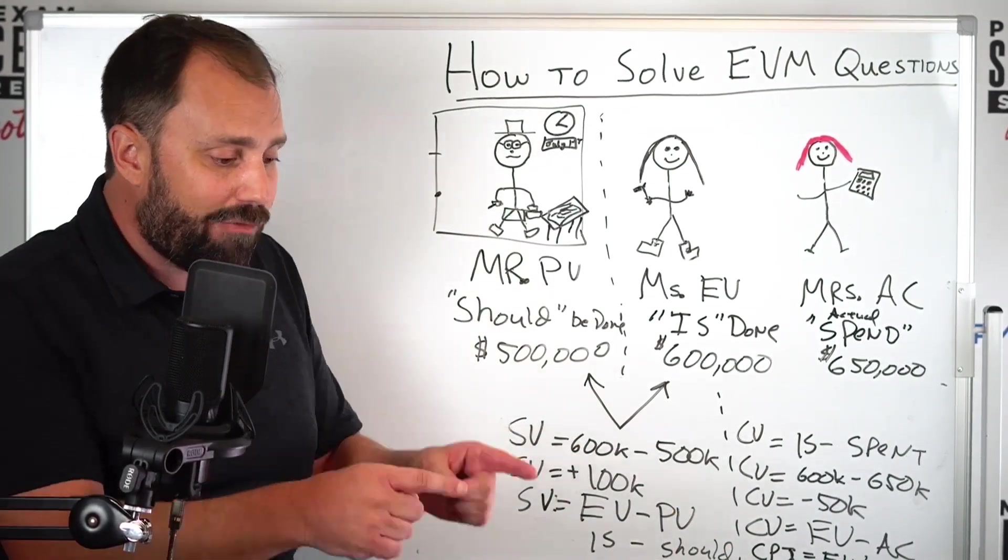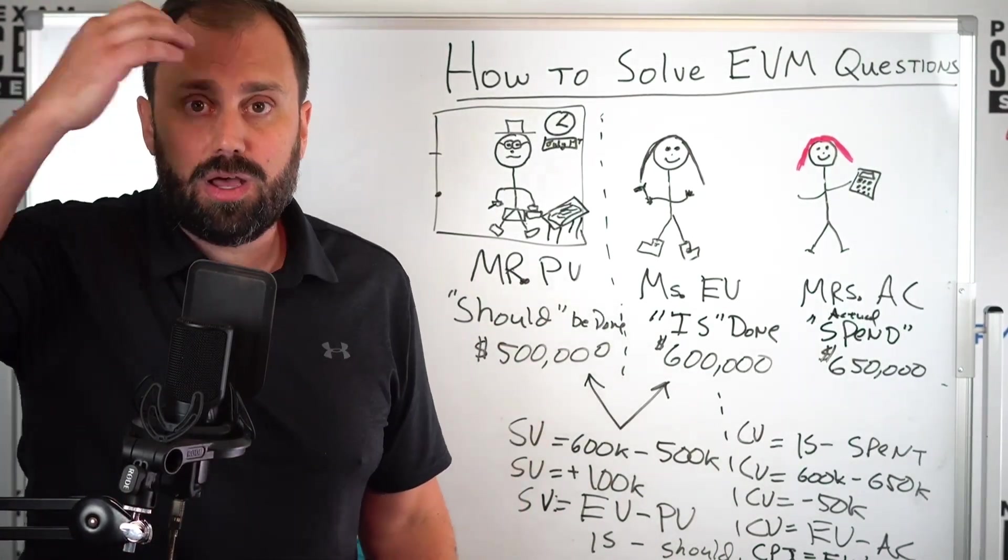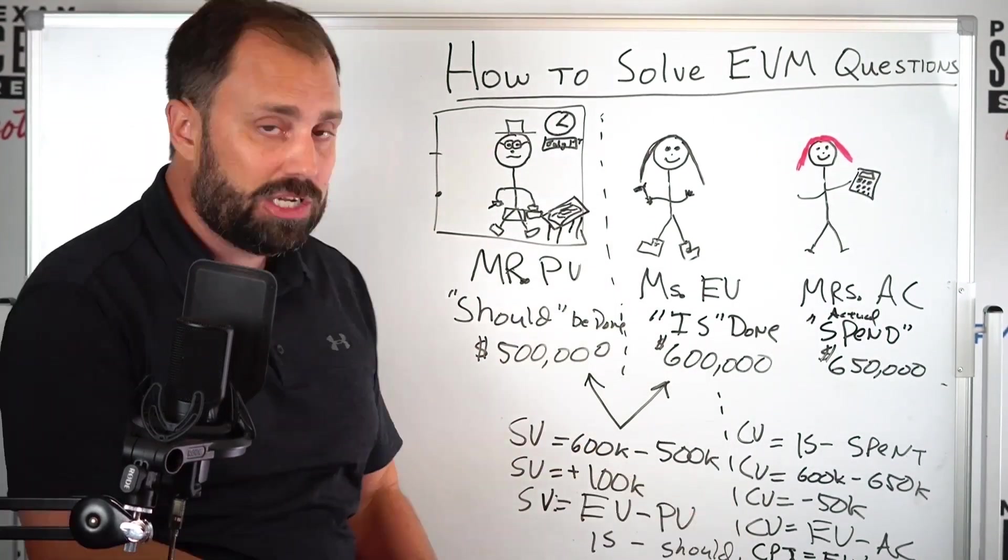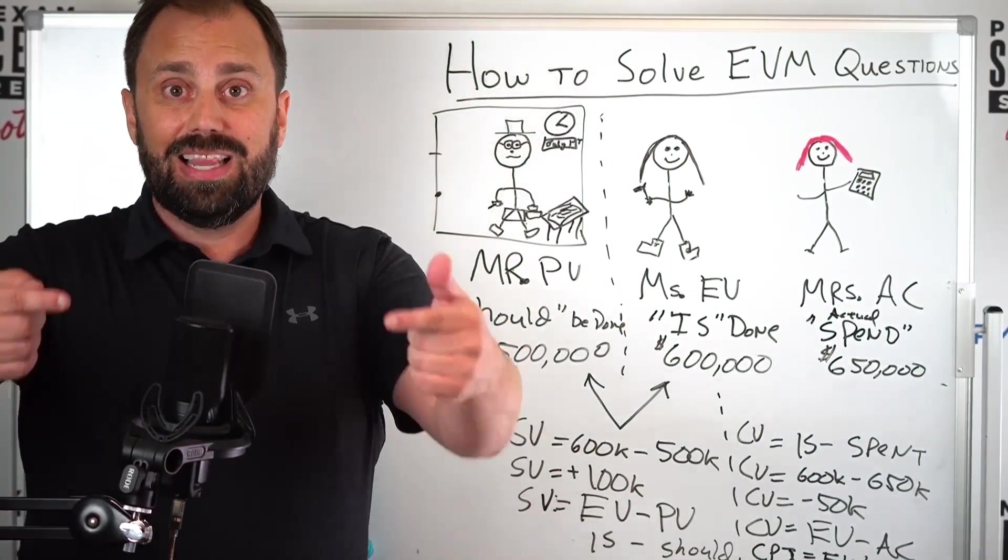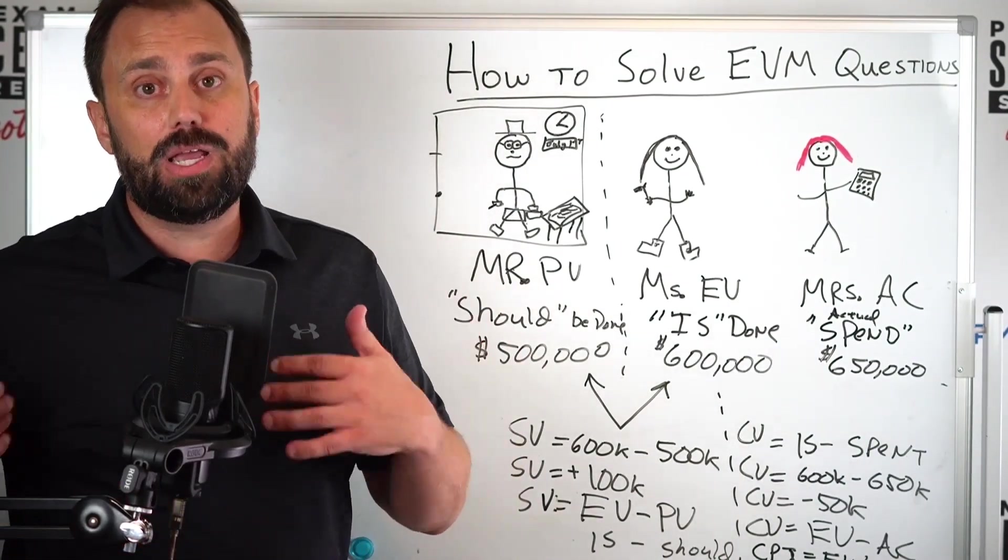Because what does CPI do? It means every dollar we put into our project, just like pulling a lever in a slot machine, how much money are we getting out each day? Right now, every dollar we put in means we get less than a dollar in value out. While we're doing the work fast, we're burning money while we're doing it. Not good.